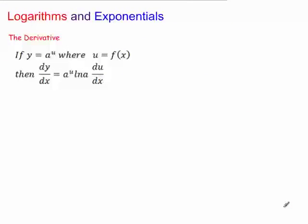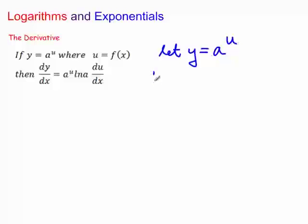How do we differentiate an exponential function? The rule for y equals a to the u is that the derivative is a to the u times ln a times du/dx. Let me prove this. If you let y equal a to the u, you take the logarithm of both sides: ln y equals ln(a to the u), and using log laws, that becomes u ln a.